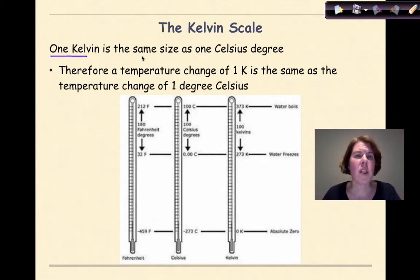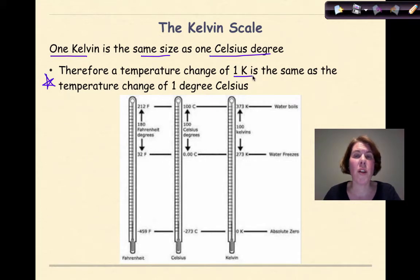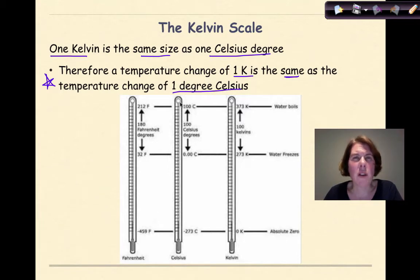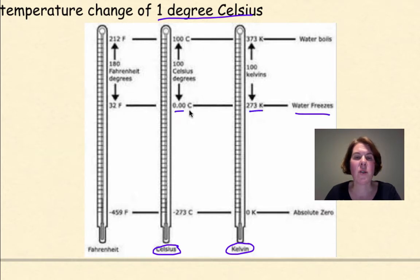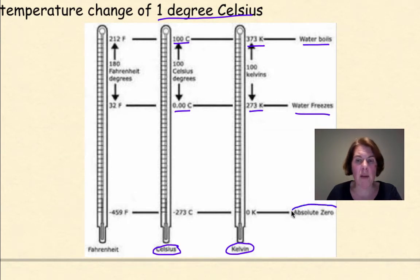One Kelvin is the same size as one degree Celsius — this is really important. A temperature change of one Kelvin is the same as a temperature change of one degree Celsius. Note: you never say 'degrees Kelvin'; it's just 'Kelvin.' Looking at our thermometers, water freezes at 273 K and 0°C, water boils at 373 K and 100°C, and we're about to look at absolute zero.